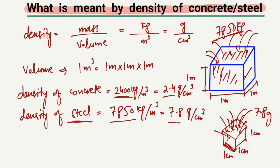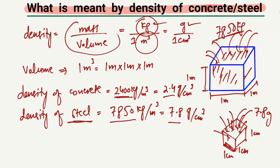So I hope you guys understand what is meant by the density of concrete or steel. It is basically the weight or mass of the material in a unit volume — mass over unit volume. Whether expressed in kilogram per cubic meter or gram per cubic centimeter, you can find the density of any material by knowing how much weight fits in one unit of volume. Don't forget to subscribe to our channel. Thank you for watching.